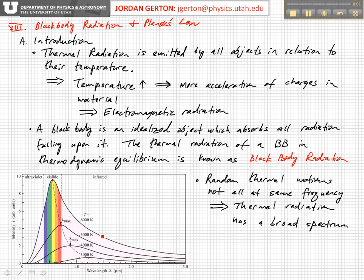If we look at these different experimentally obtained curves, the thermal spectrum from the sun peaks in the visible range near the green wavelengths. The thermal radiation of an incandescent light bulb peaks in the infrared region and is decreasing in the visible range.